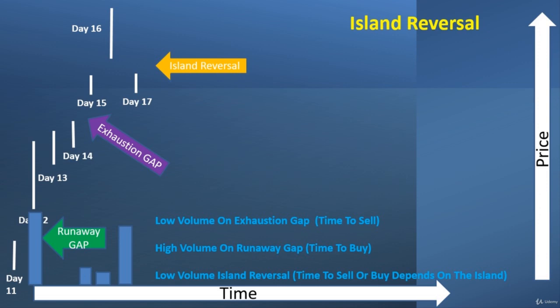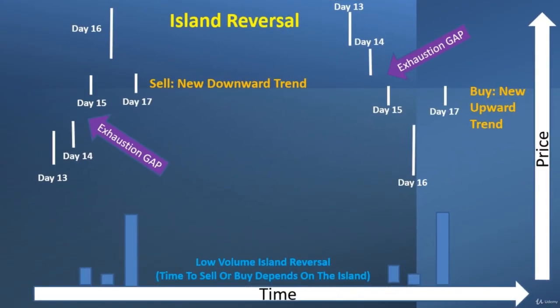Then on day 17, there's going to be some high volume. You've got your island in reverse — you've got these low volume days of exhaustion gaps, the island forming, and then the reversal going the opposite way with a lot of volume. It's going to go the other way. You can see on the left that this was an upward trend that was exhausted, jumped up from day 15 to 16 to form an island. Now prices have come down with another gap and a lot of volume — people are really selling and trying to get out.